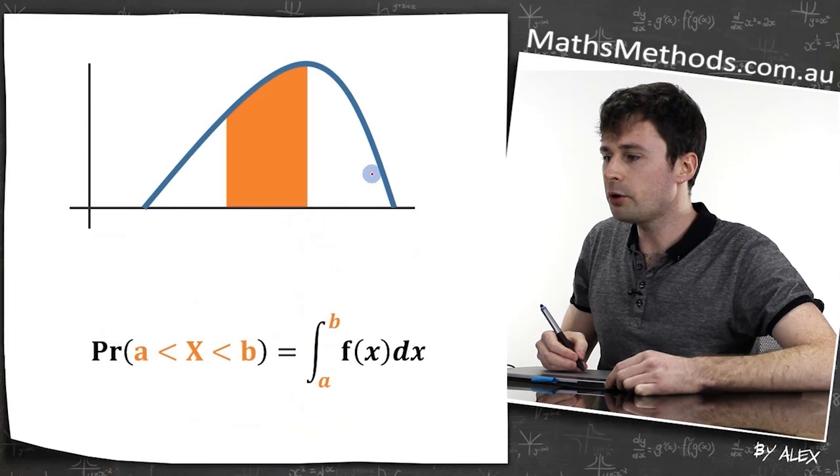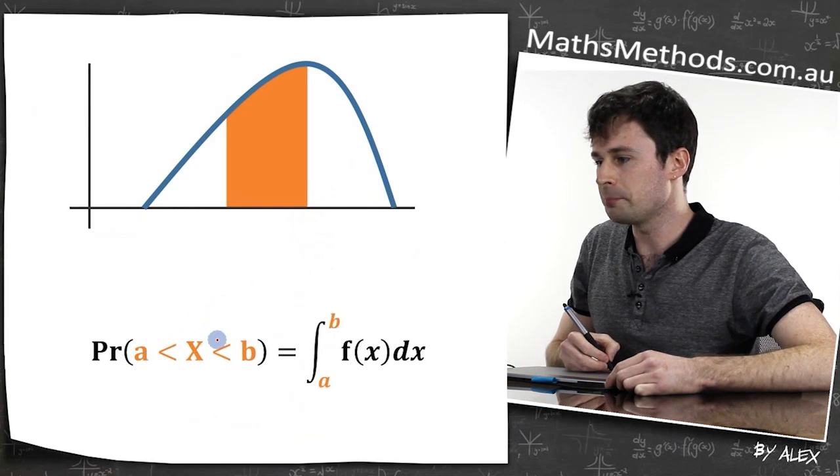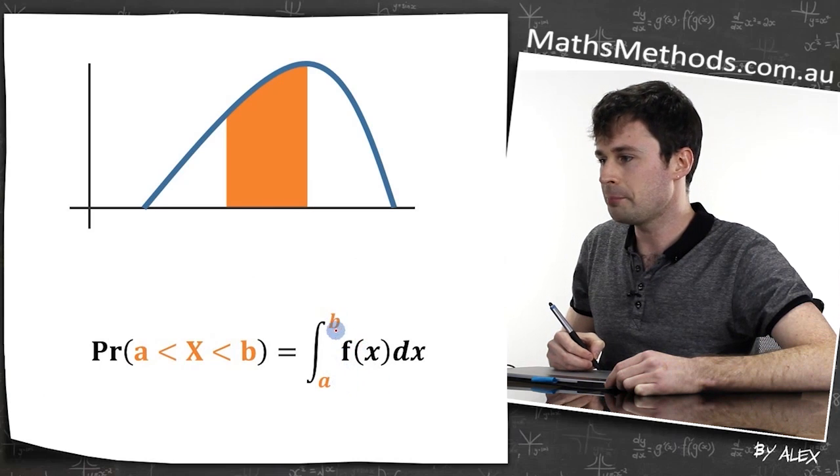Now figuring out probability, if I want to know the probability of a to b, I need to actually integrate over a to b.